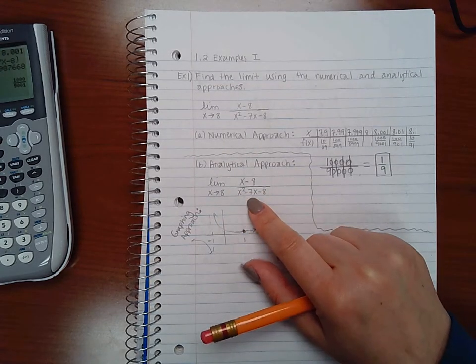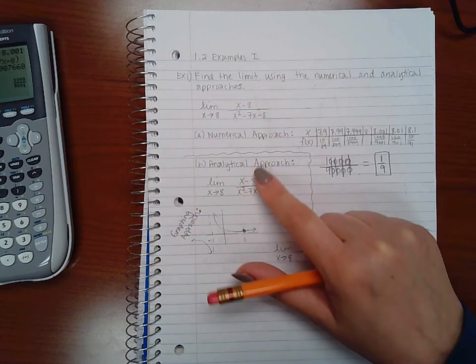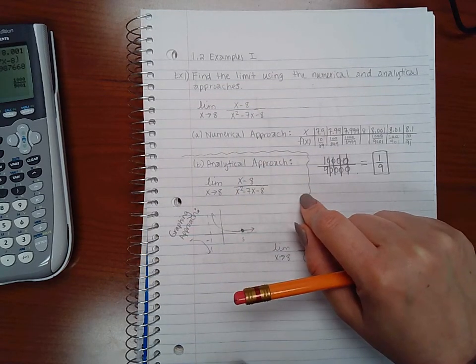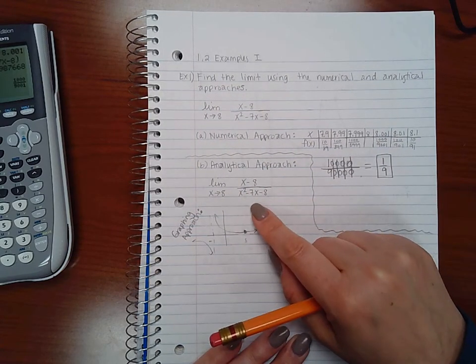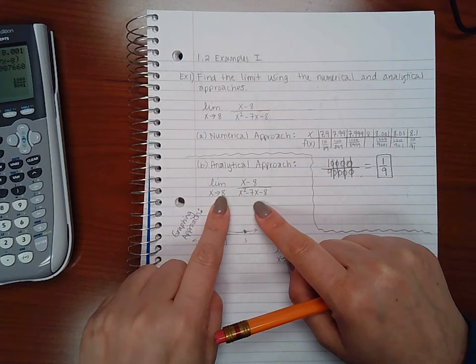Now I can't because if I substitute 8 into my denominator I'll get zero, which will make the whole fraction undefined. So I do need to reduce or simplify this fraction before I can take the limit.